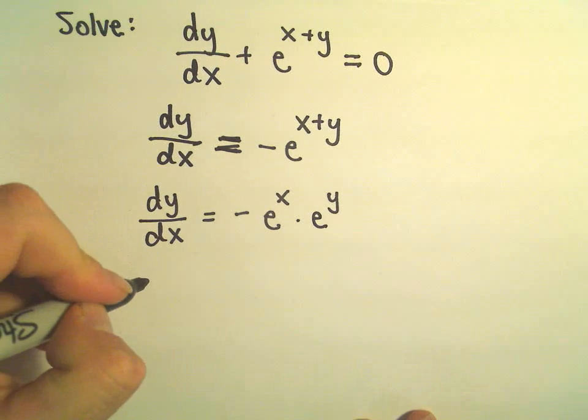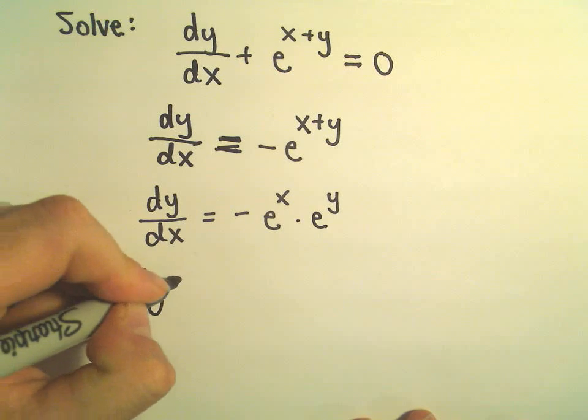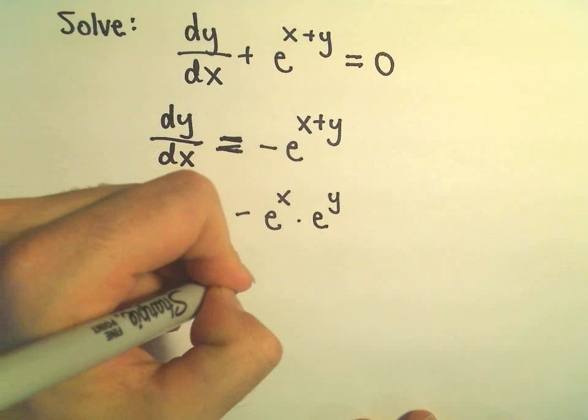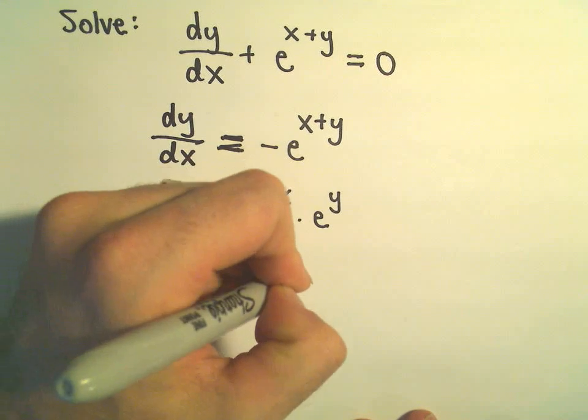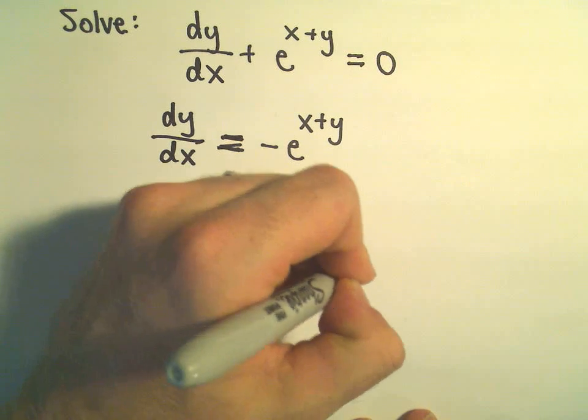So I'm going to multiply both sides here by my dx. That's going to give me negative e to the x times e to the y times dx.